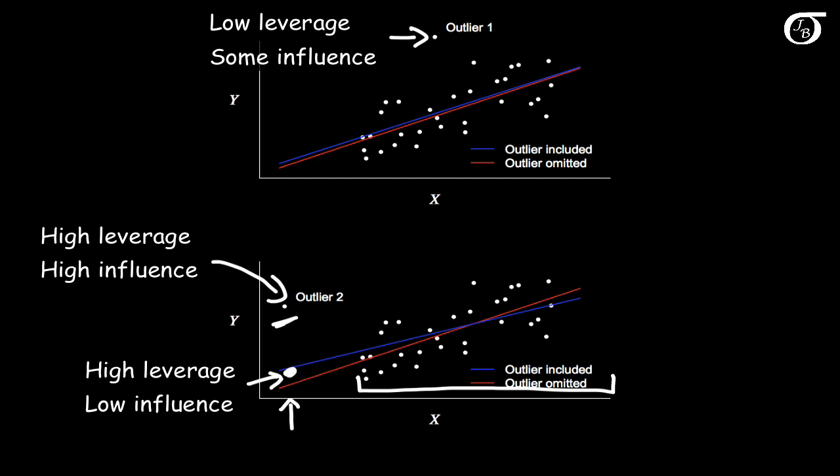And suppose we had another data point that fell right near the mean of x and right near the line. Well this data point is going to have low leverage, and it's not going to be influential.